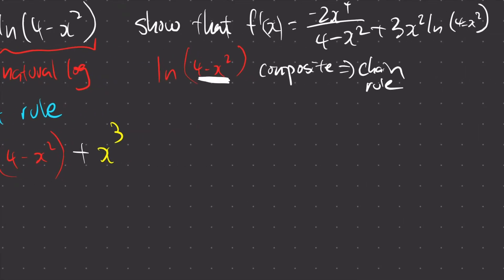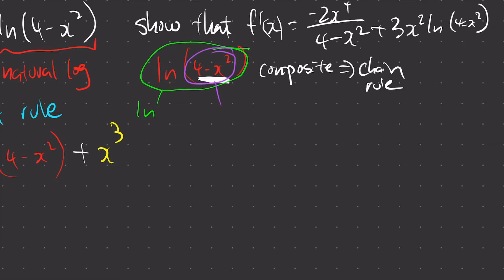To do chain rule, we have to separate it into different layers. The outside layer is ln, and the inside layer is (4 minus x squared), which is a polynomial function type.